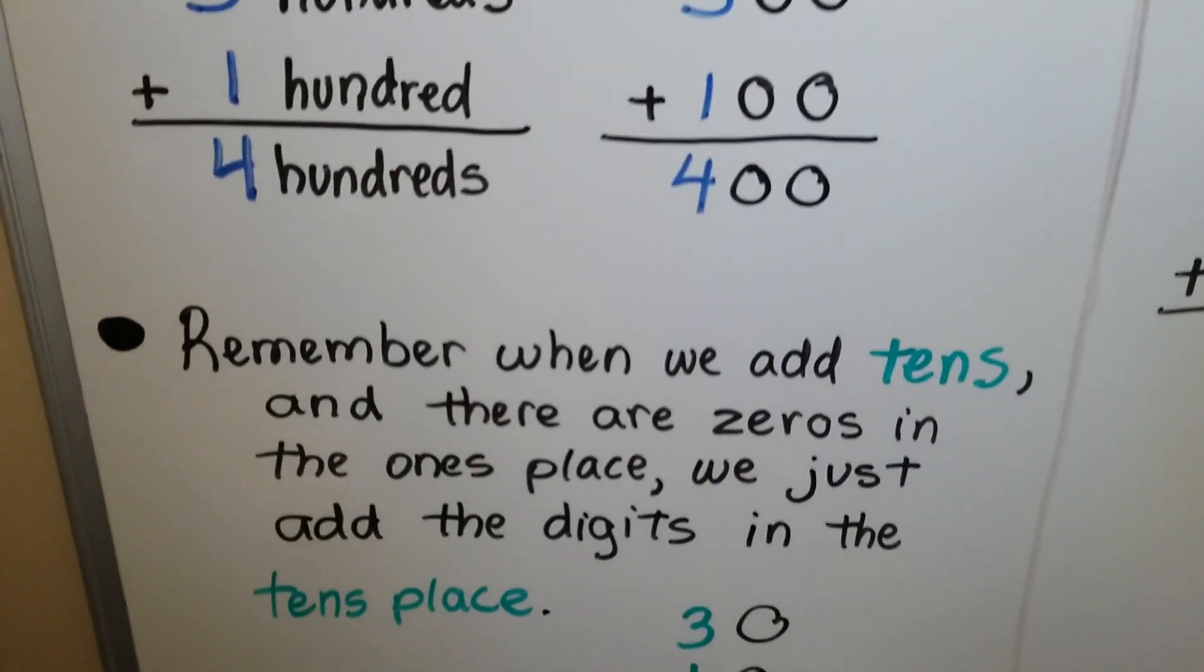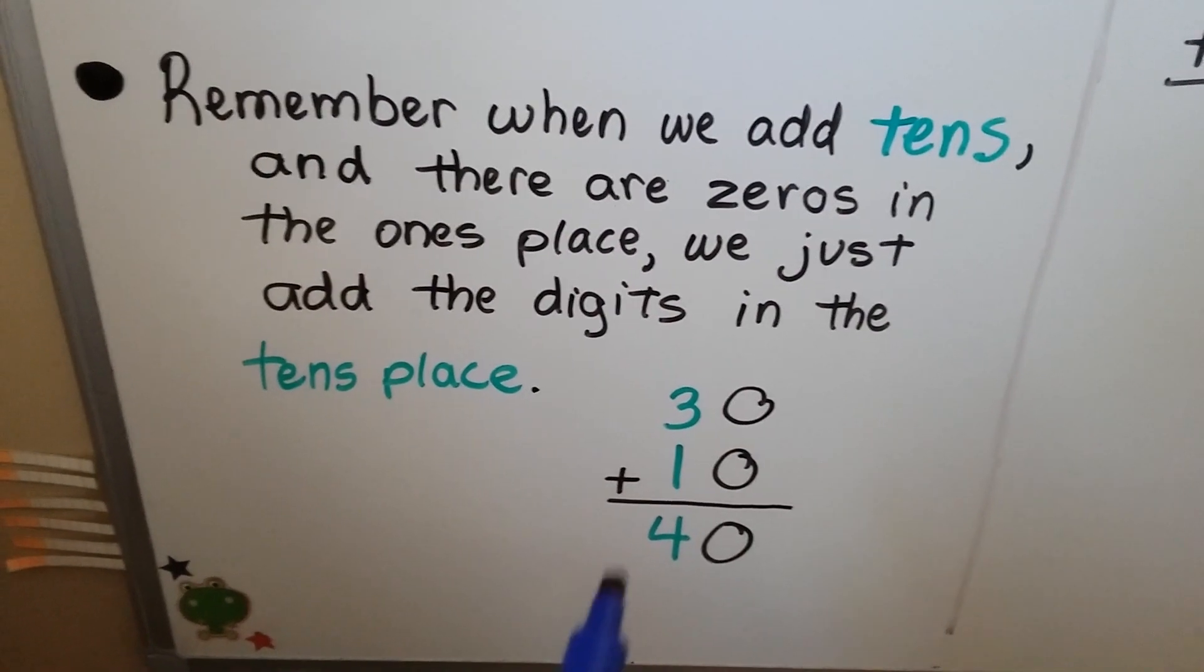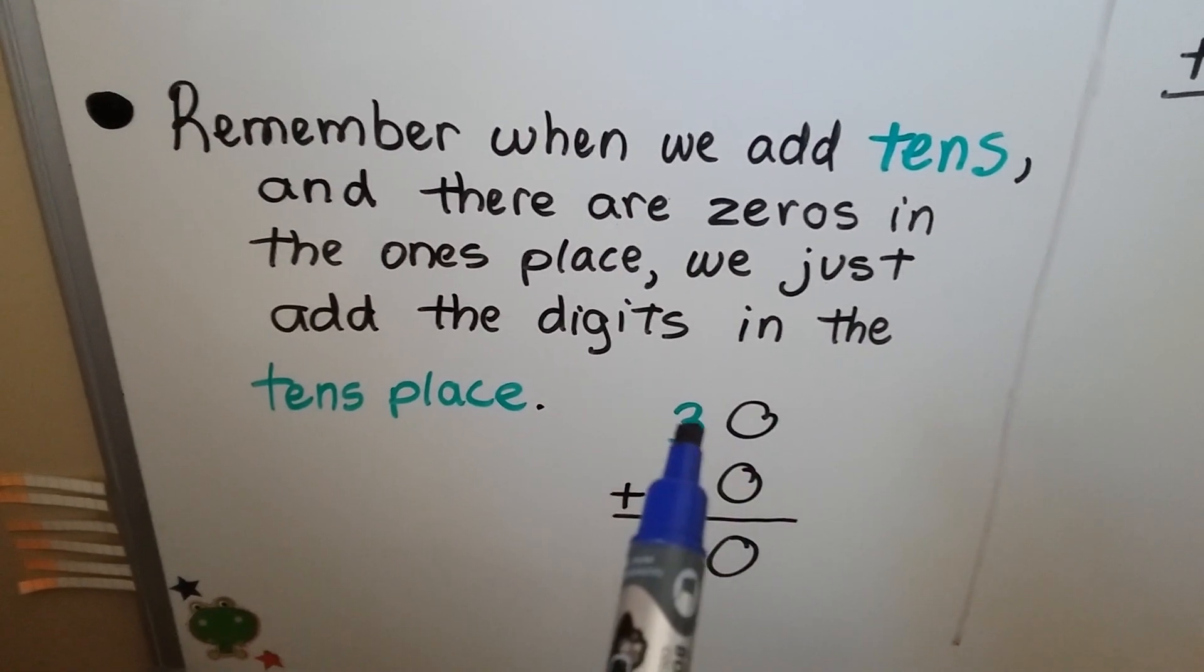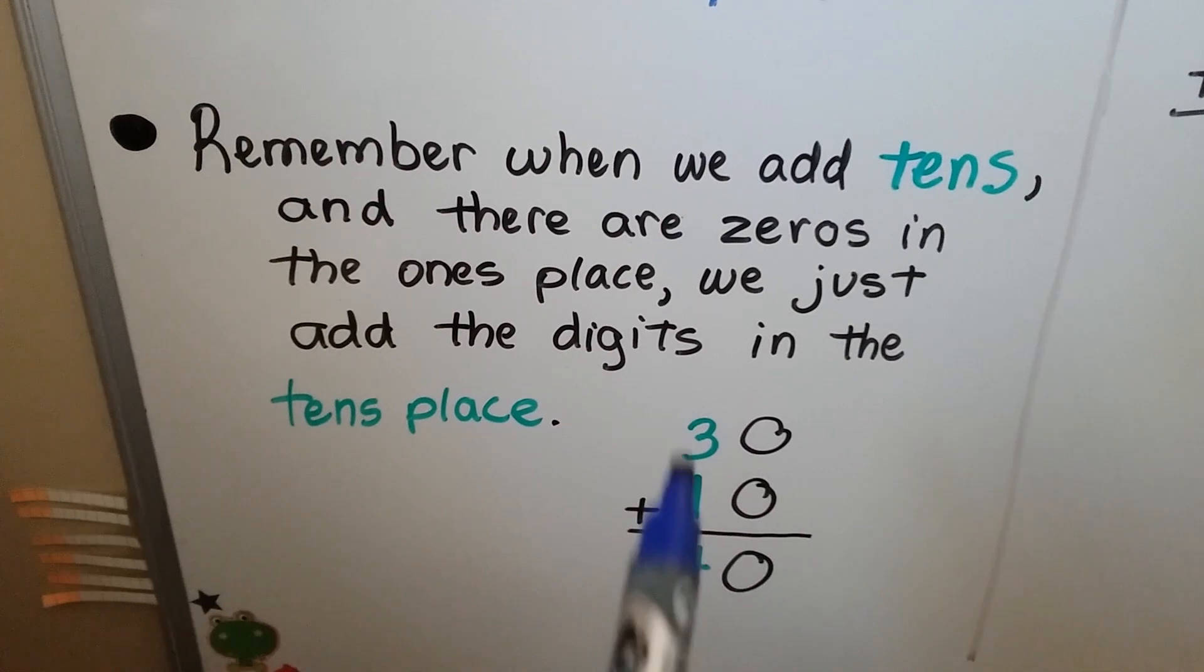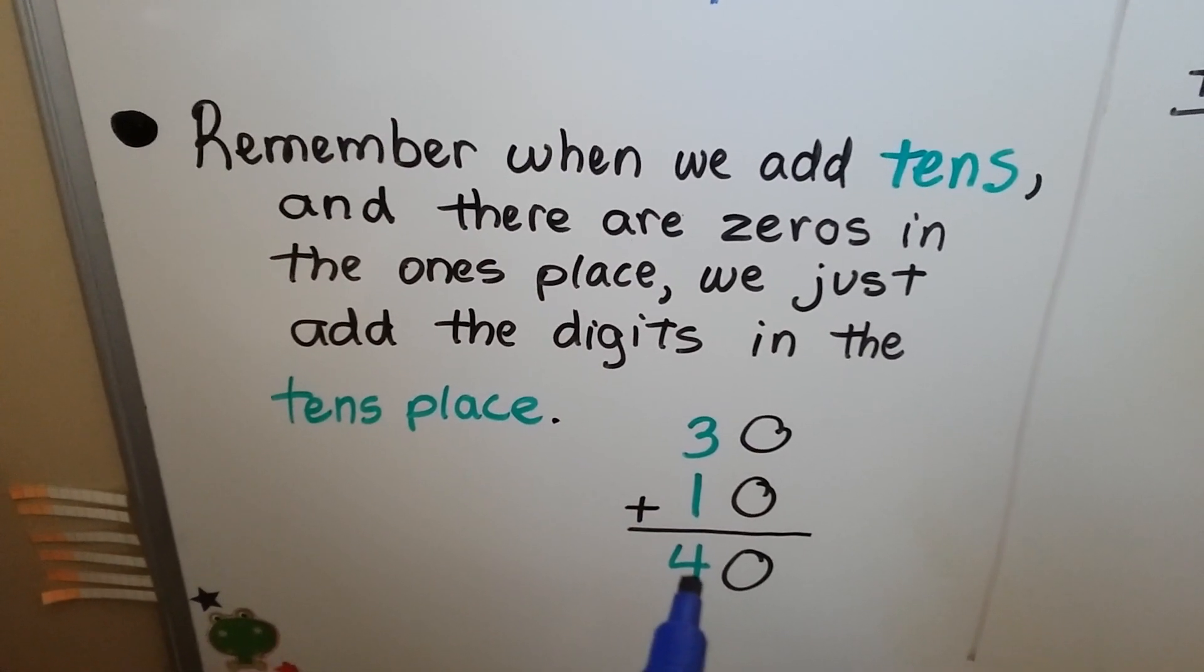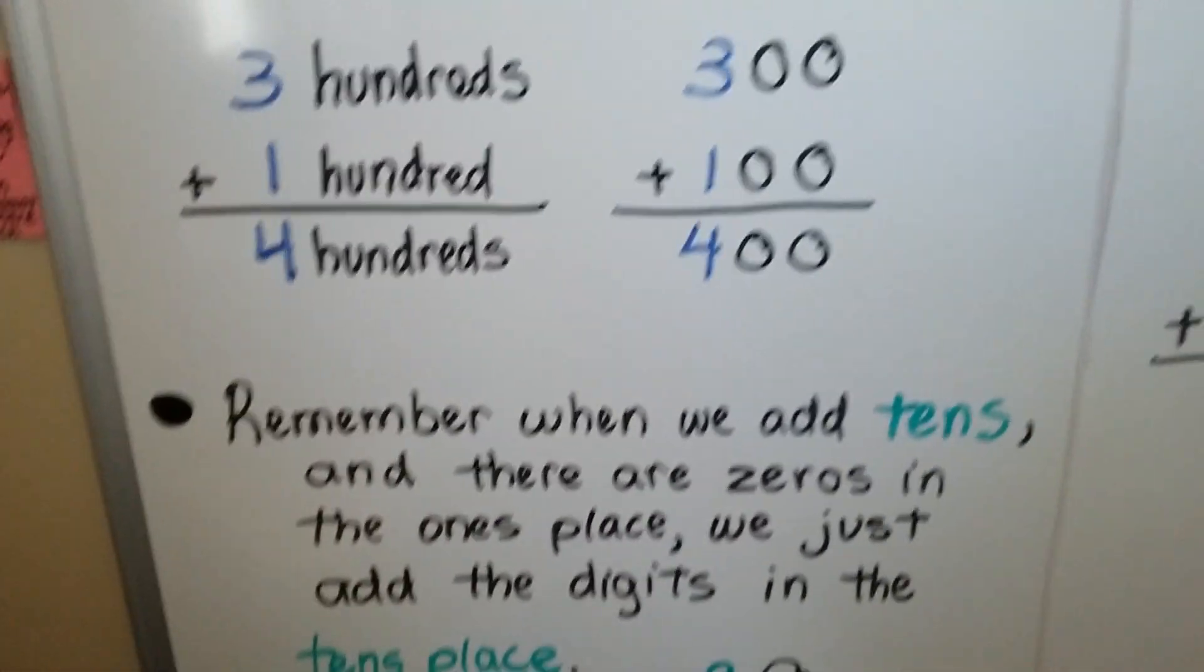Remember when we add tens and there's zeros in the ones place, we just add the digits in the tens place? It's the same thing. If we add 30 plus 10, we just add 3 plus 1, which equals 4, and then add the zero in the ones place. Same thing with hundreds.